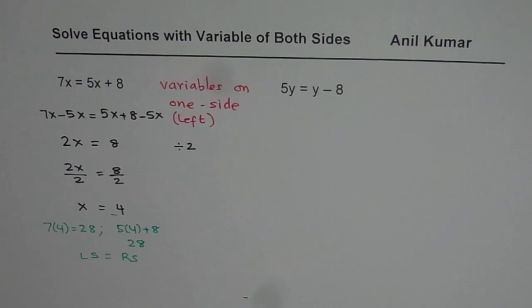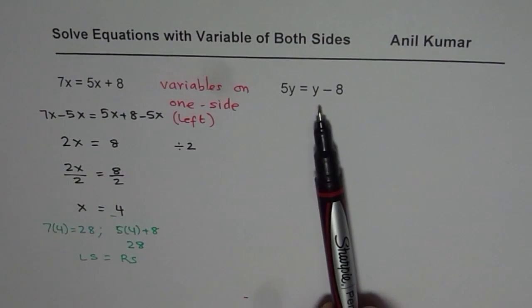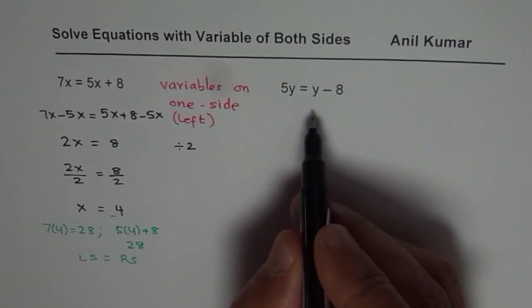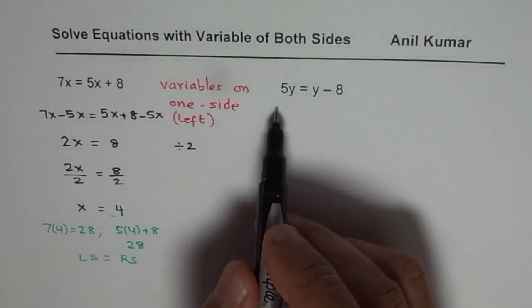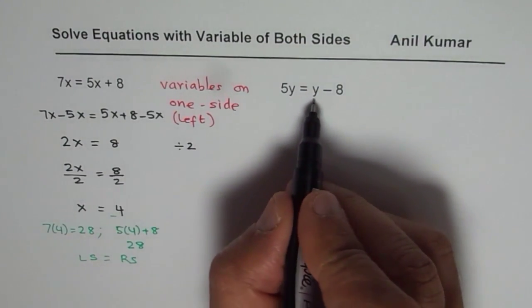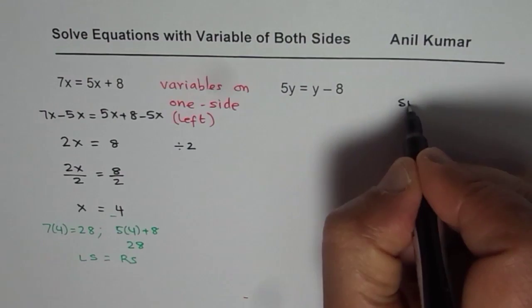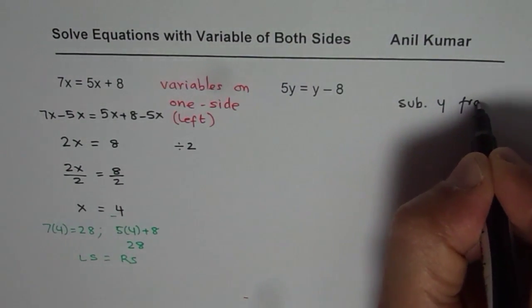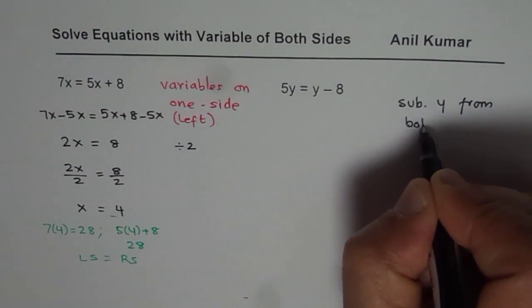So that is the checking part of a solution. In the second example I will solve and you check it on your own. So first step is to bring variables on one side. In this particular case we will take away y from both sides.